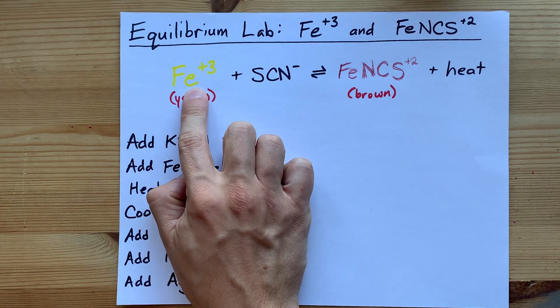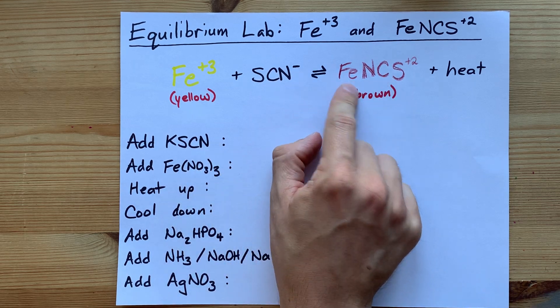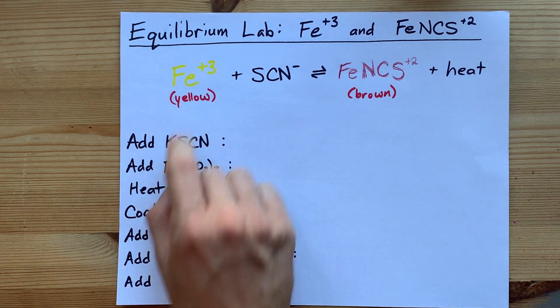Let's say you combined some iron 3 and some SCN minus in solution and made just a little bit of this so that your solution is yellow.